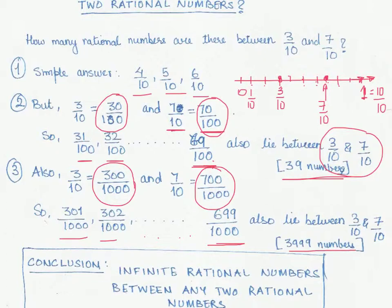And therefore it kind of brings us to the conclusion that between any two rational numbers there lie infinite rational numbers.